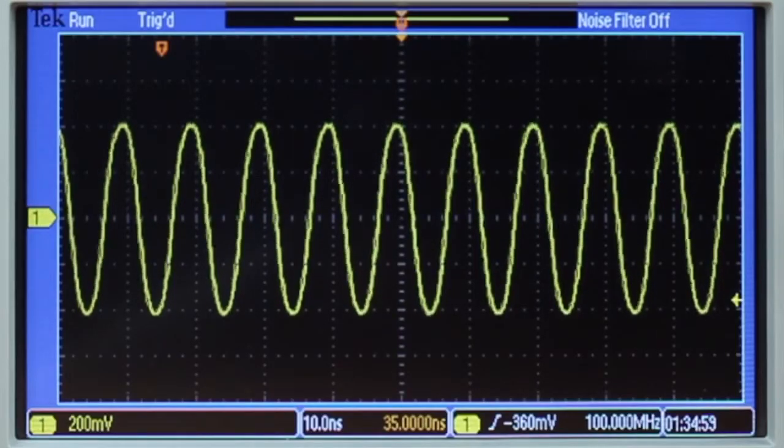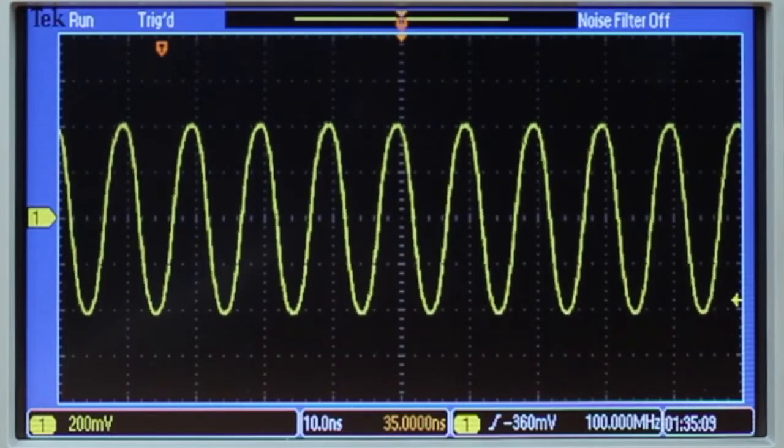The Tektronix oscilloscope is specified to 5000 waveforms per second. There is no external trigger out so we can't see how this changes with different functions on the scope.